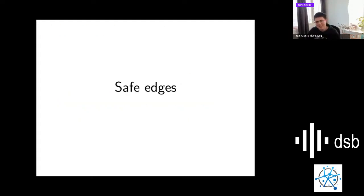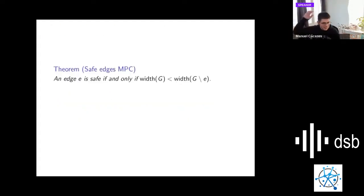Let's start with safe edges because they are simpler. We have this simple theorem that says that an edge is safe for the minimum path cover problem even if the width of the graph changes if we subtract this edge from the graph. The main idea is that if we subtract an edge and the width doesn't change, it means there is another solution that doesn't use this edge. As such, this edge is not safe, it's not part of all solutions.